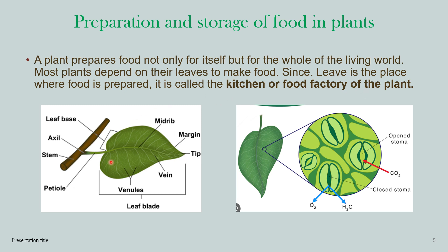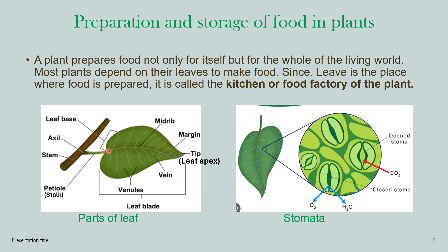Let's look at the parts of the leaf. The flat part of the leaf is known as the leaf blade. Running through the middle of the leaf is the main vein, which is also known as the midrib. There are a number of side veins coming out from the main vein.